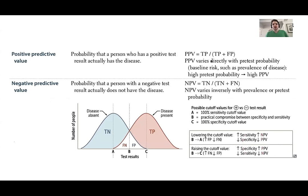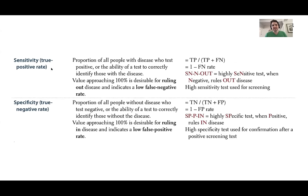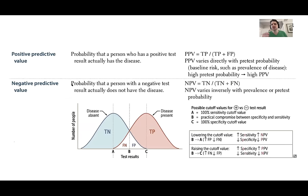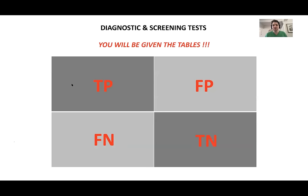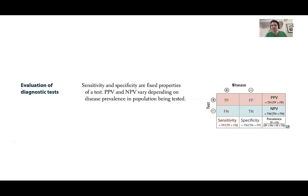When we talk about positive predictive value — the probability that a true positive is actually a true positive — instead of looking at the disease pattern like sensitivity and specificity, we're looking at how good the test is. Sensitivity and specificity look at the disease pattern vertically; positive and negative predictive value look at how good the actual test is horizontally. Prevalence is everyone with the disease over the total, while accuracy is true positives plus true negatives over everybody.